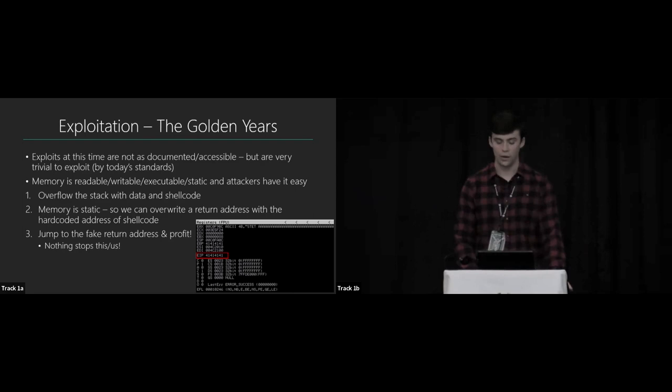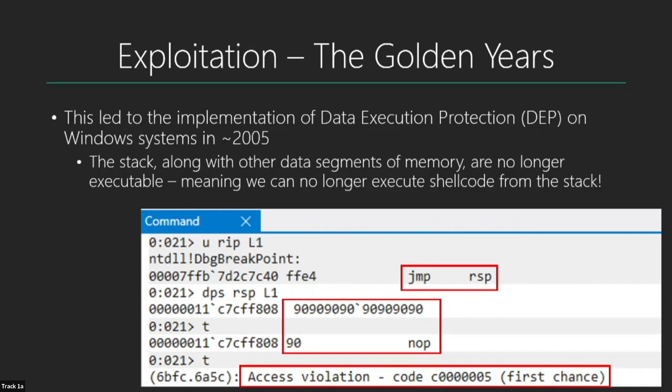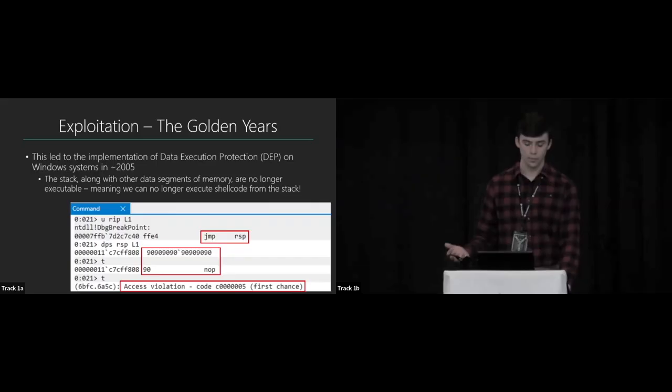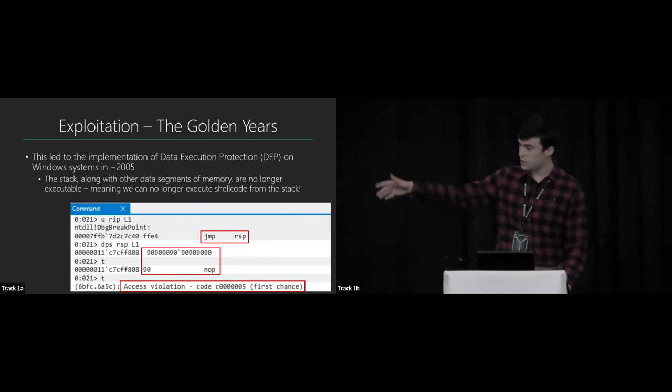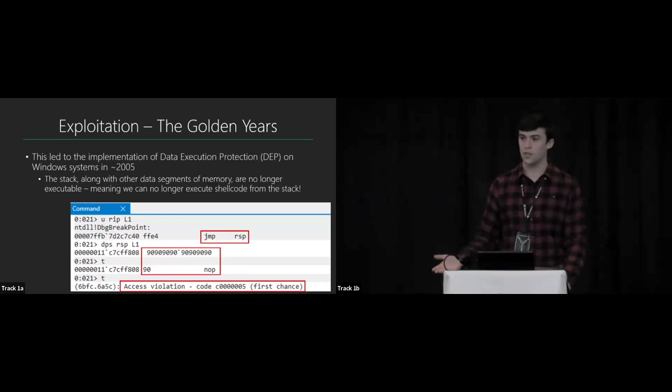Nothing really stopped this at the time. This kind of widespread exploitation led to the implementation of a mitigation most of us are familiar with: DEP, Data Execution Prevention, which has been around since 2005 in Windows. Basically, it separates boundaries between data and code. Something like the stack is meant for holding data, not code, so why does it need to be executable? We can just mark it as non-executable.